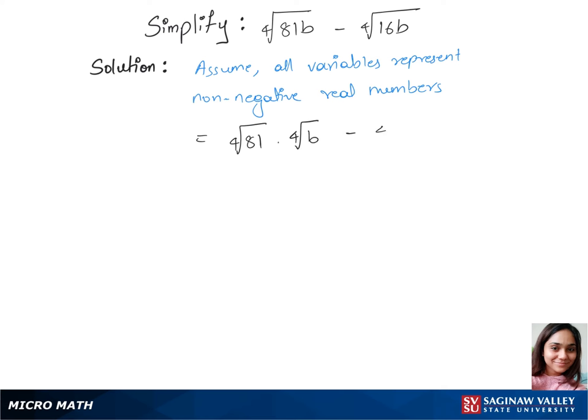minus fourth root of 16 times fourth root of b. In our next step, we have fourth root of 81 can be written as 3 to the power 4, times fourth root of b, minus fourth root of